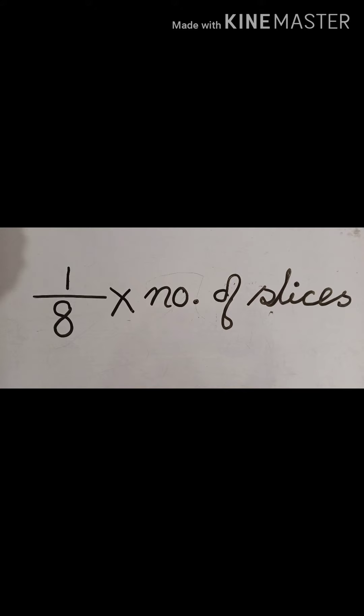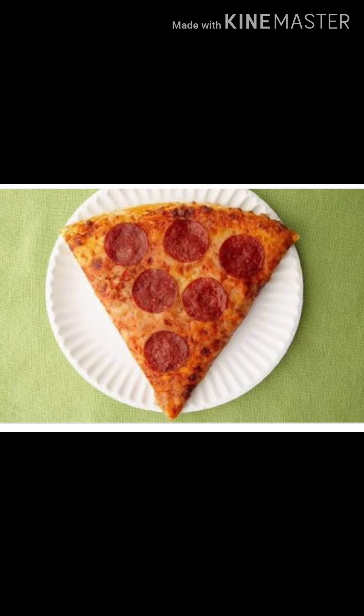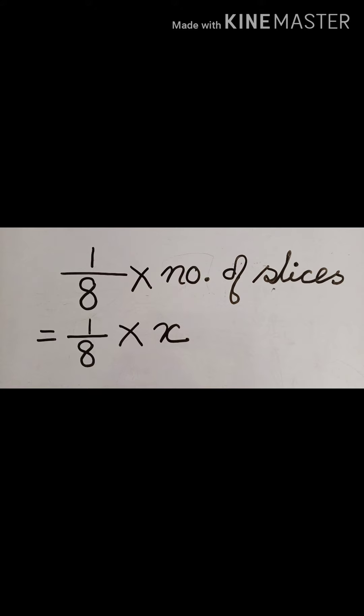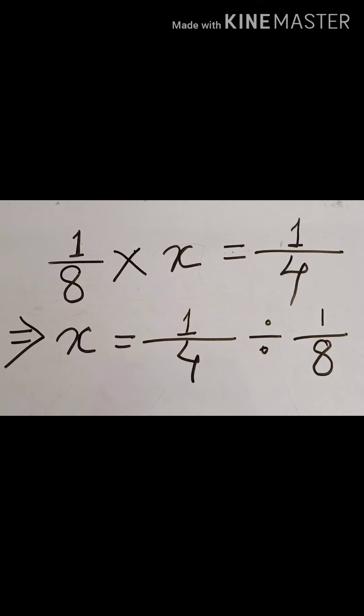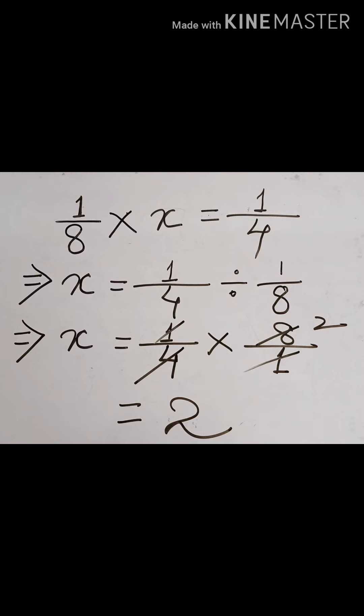Let us assume you cut this part into x number of slices. Then one eighth multiplied by x should be equal to one fourth. To find x, we transpose one eighth to the other side, giving us x equals one fourth divided by one eighth.